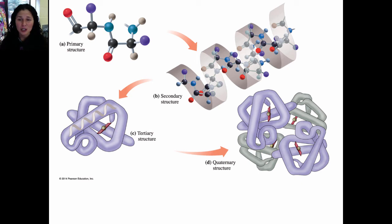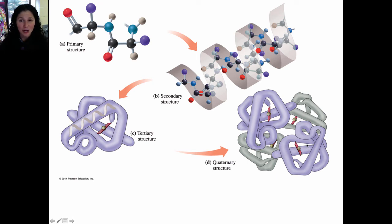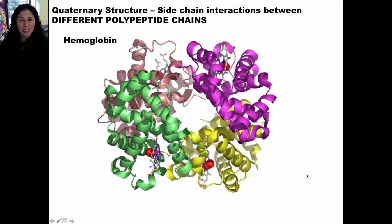Now we're going to talk about quaternary structure. Quaternary structure features multiple protein chains coming together and is characterized by the same types of interactions that define tertiary structure, except the interactions are between side chain atoms of different protein chains. The cartoon shown in your book is actually a cartoon of hemoglobin — it shows two different protein chains in purple and two different protein chains in grey. Hemoglobin is the protein in your blood that carries oxygen, and it actually binds to a small molecule with oxygen binding right on that small molecule.